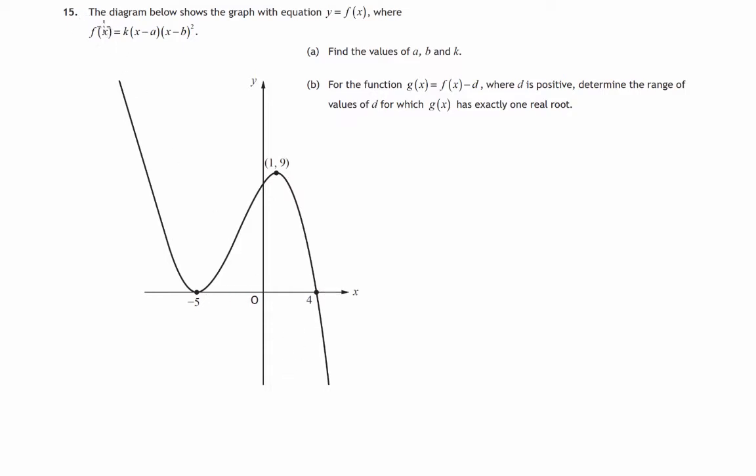We'd say when is f of x equal to 0? Where does it cross the x-axis when f of x equals 0? When that expression k times x minus a times x minus b times x minus b equals 0. And there's your x minus b all squared. So to solve this produces x equals negative 5 and x equals 4.